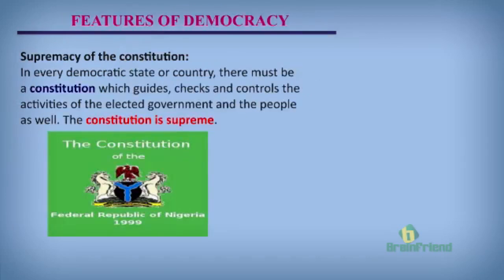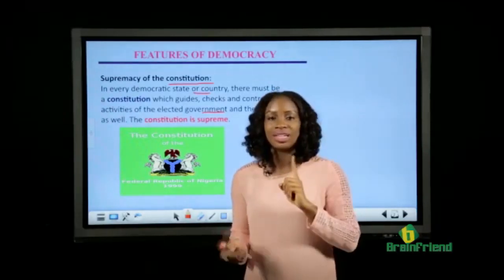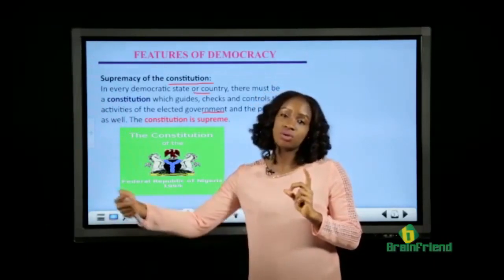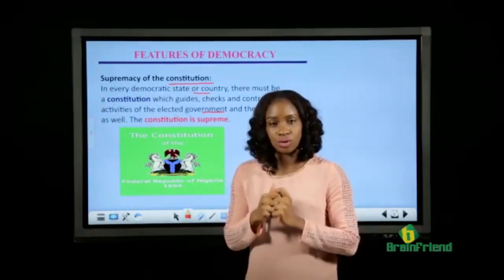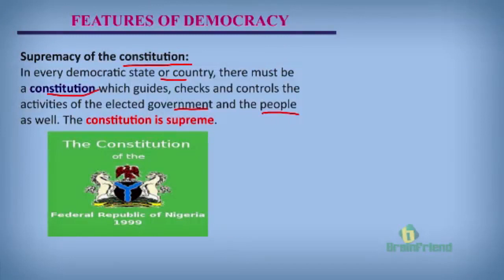Another feature of democracy is the supremacy of the constitution. In every democratic state, there must be a constitution in which the laws of the country are embedded. This constitution and these laws guide, check, and control the activities of the government and the people as well. The constitution is supreme — it is above everyone. Nobody can do anything outside the constitution, and when someone goes against it, he or she is meant to be punished.